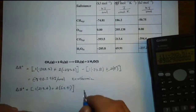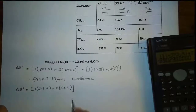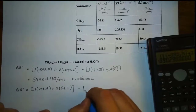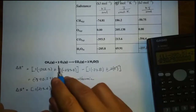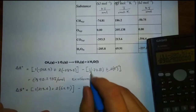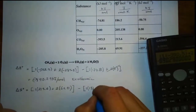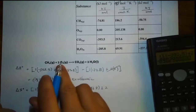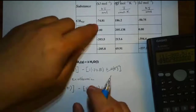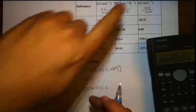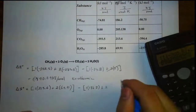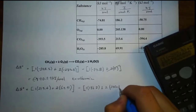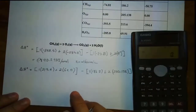Now let's go back to this. We close the product side with another bracket, then minus the reactant side. We have one mole of CH4, which is 186.2. And also two moles of oxygen. Remember, delta S is not the same as delta H and delta G — it does have values for elements. Two moles of oxygen: the value is 205.138.